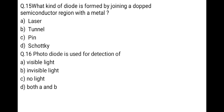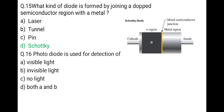The next question: what kind of diode is formed by joining a doped semiconductor region with a metal? First laser, second tunnel, third pin, last Schottky. In a Schottky diode, semiconductor material is joined with metal. So the correct option is D: Schottky diode.